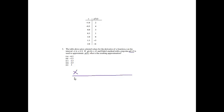Problem 3. The table above gives selected values for the derivative of a function g on the interval negative 1 to 2. If g of negative 1 equals negative 2, and Euler's method with a step size of 1.5 is used to approximate g of 2, what is the resulting approximation? I'll make a table. Starting at x equals negative 1, adding step size 1.5 gives 0.5, then 0.5 plus 1.5 gives 2, which is exactly where I need to get.